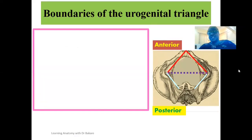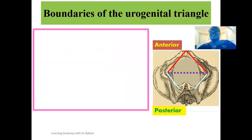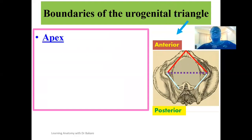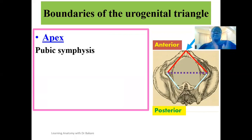Let's go through the boundaries of the urogenital triangle. We already know this triangle is a triangular space located in the anterior part of the perineum. The perineum is created around the inferior view of the pelvic cavity, subdivided into the anterior triangle at the front and the posterior triangle below. Because it is a triangular space, it has an apex. The apex of the urogenital triangle is formed by the pubic symphysis, elected in blue. The pubic symphysis is the joint created in the anterior part of the pelvic cavity.